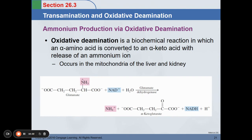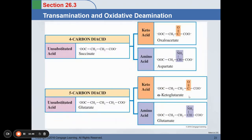Both the liver and kidney have filtering processes. Glutamate combined with NAD+ and water through the enzyme glutamate dehydrogenase forms ammonium compound and alpha-ketoglutarate. Ammonium must be removed from our body.